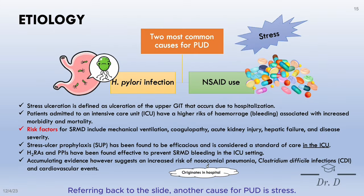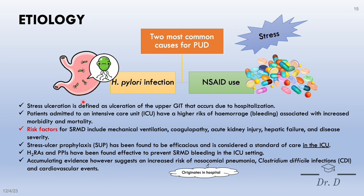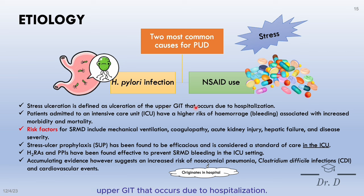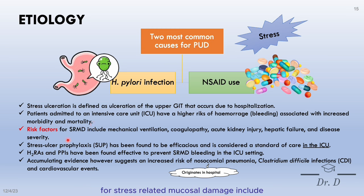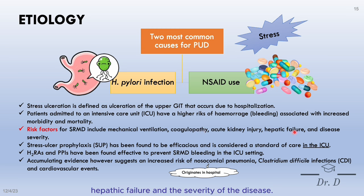Another cause of peptic ulcer disease is stress. Stress ulceration is defined as ulceration of the upper GIT that occurs due to hospitalization. Patients admitted to an intensive care unit have a high risk of hemorrhage associated with increased morbidity and mortality. Risk factors for stress-related mucosal damage include mechanical ventilation, coagulopathy, acute kidney injury, hepatic failure, and severity of disease.